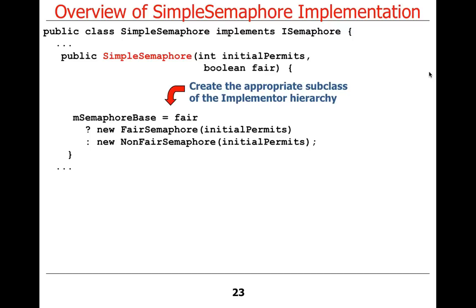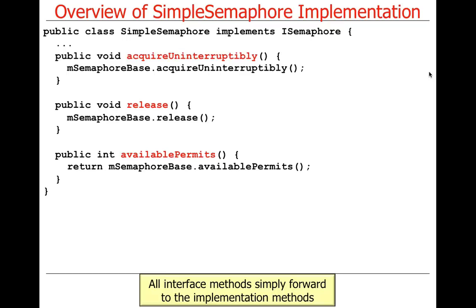Here is the SimpleSemaphore constructor. All it does is create the appropriate subclass of the implementer hierarchy. If it's fair, it makes a new FairSemaphore with the initial permits. If it's not fair, it makes a new NonFairSemaphore with initial permits. And if you think that's easy, take a look at all the methods for SimpleSemaphore — all these guys do is simply forward to the underlying semaphore implementation via the bridge pattern to the appropriate subclass in the implementer hierarchy. Just classic Bridge 101.